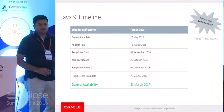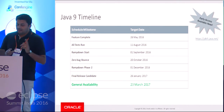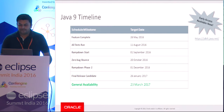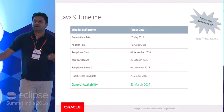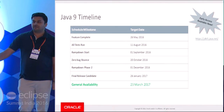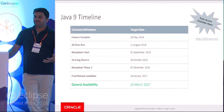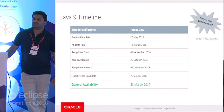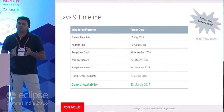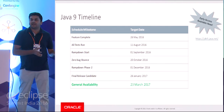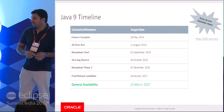Java 9 will be released on March 23rd, 2017 — about six and a half months from today. The early access version is already available. How many of you have tried the Java 9 early access? As noted, it has already broken some pieces of code — for example, if you're using an internal API, it used to run with warnings in Java 8 but in Java 9, it will just break.